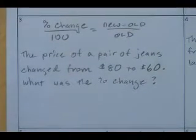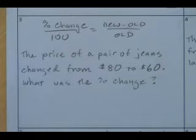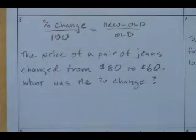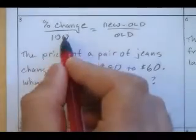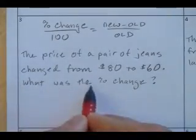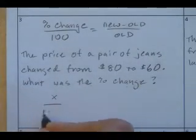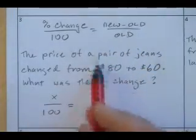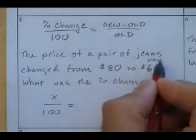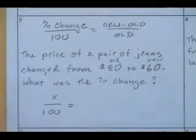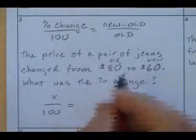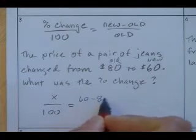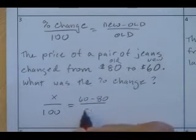Here's a problem: the price of a pair of jeans changed from $80 to $60. What was the percent change? So I have percent change over 100 — I'm trying to find the percent change, so I'll call that x — equals new minus old over old. The new is 60, the old is 80, so that's 60 minus 80 over 80.